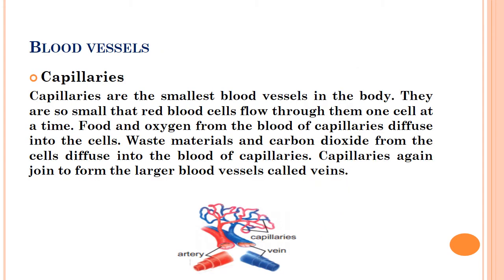Capillaries are the smallest blood vessels in the body. They are so small that red blood cells flow through them one cell at a time. Exchange of food and oxygen occurs here — food and oxygen from the blood of capillaries enter into the cells by the process called diffusion. Similarly, waste materials and carbon dioxide enter into the blood of capillaries through diffusion. Capillaries again join to form larger blood vessels which are called veins.